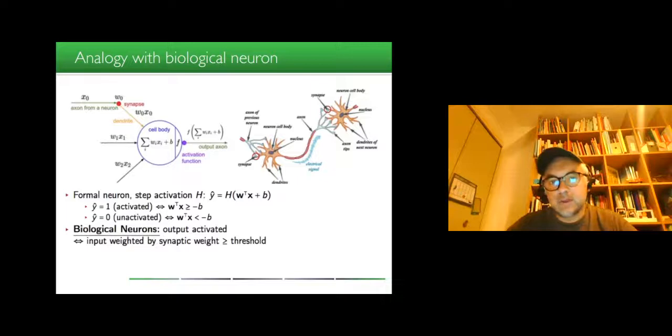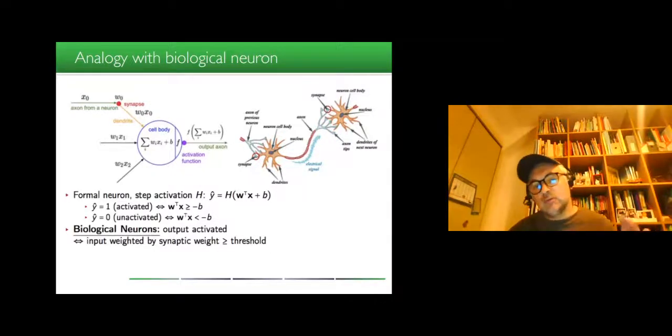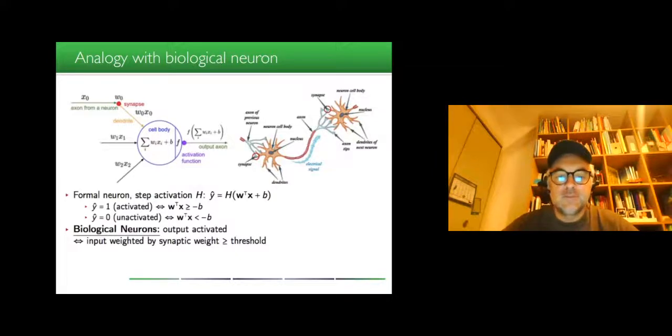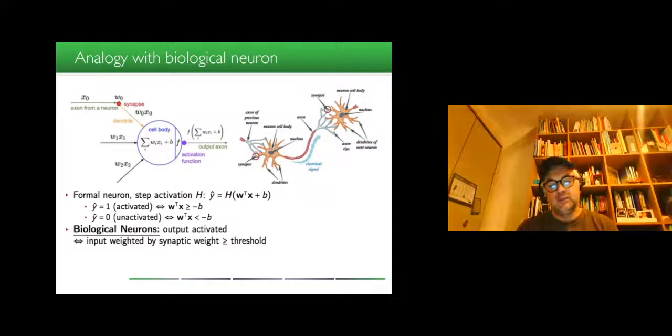There is of course an analogy with the biological neuron as already explained, where you have this weighted sum corresponding to the action of pulling on the neurons, integration of the electrical currents which are coming to the cell body. If it passes a sufficient amount of energy, then it goes to the next neurons. If the scalar product w transpose x plus b is above the threshold, then the neuron is activated, we provide 1, and otherwise it is 0.